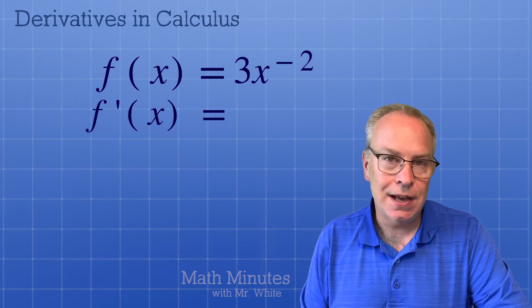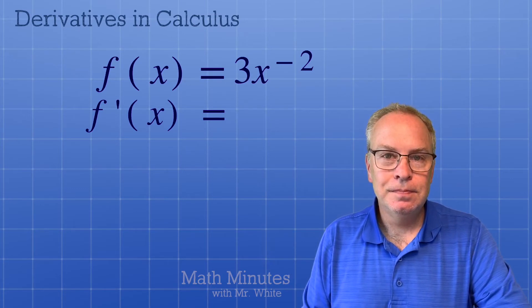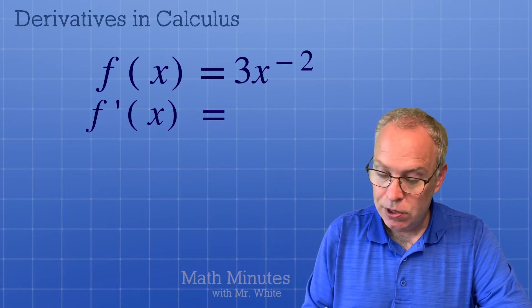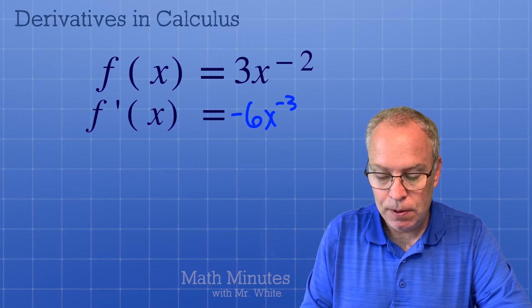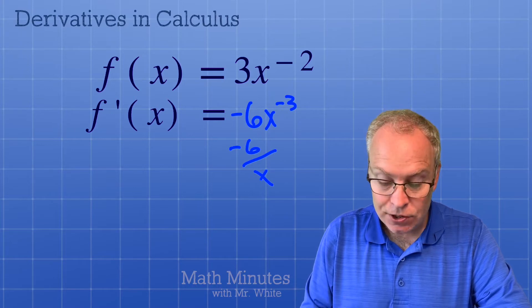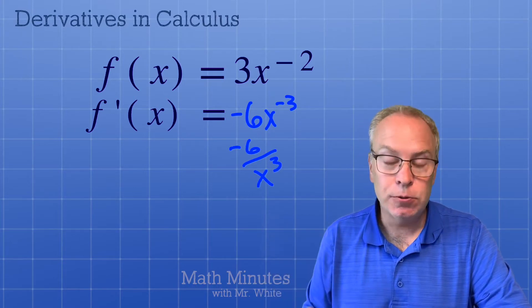What's the derivative of 3x to the negative second power? Take that negative 2, throw it out front, multiply with the 3, we get negative 6x to the, then add negative 1 to that exponent. And I usually like to write this one as negative 6 over x to the third, which might be how you find it if you're doing a multiple choice test.